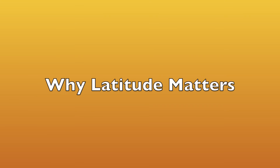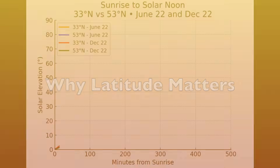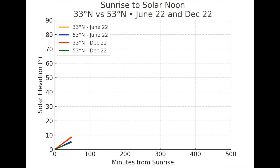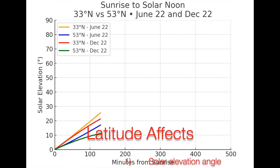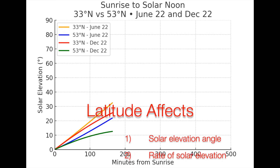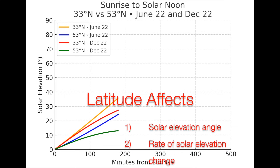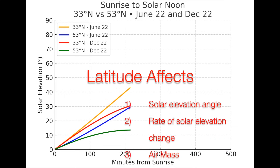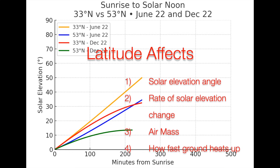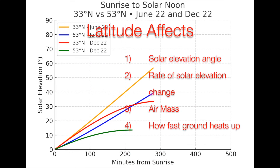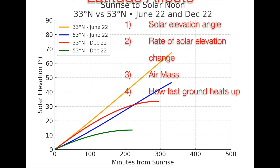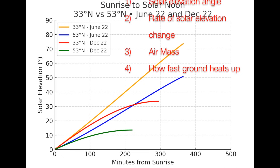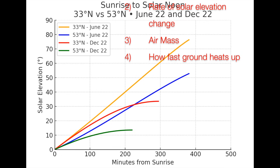Latitude determines the path of the Sun through the sky, which in turn controls: one, solar elevation angle — how high the Sun gets in the sky; two, rate of solar elevation change — how fast the Sun climbs after sunrise; three, air mass — the thickness of atmosphere sunlight must pass through; and four, how quickly the ground heats up, which in turn affects turbulence.